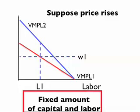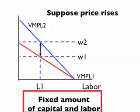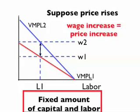Since labor and capital are fixed by assumption, the wage is forced up in this market as firms face more valuable workers in a competitive labor market. Most importantly, the increase in the wage rises by the full amount of the price increase. That is to say, W2 is greater than W1 by the difference between the two VMPL curves — the price change equals the change in the wage.